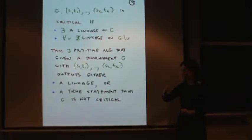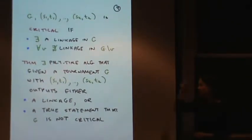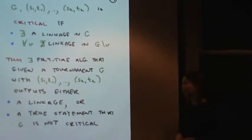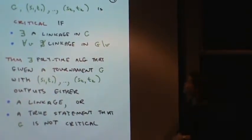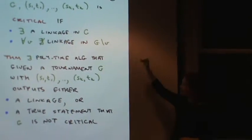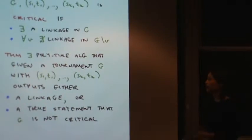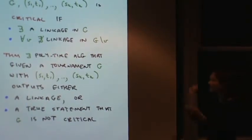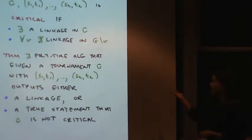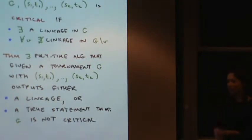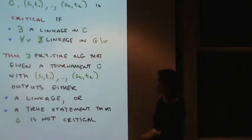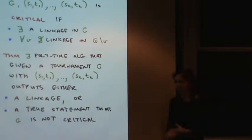What's a critical graph? It's actually a graph and a bunch of pairs of terminals. I say it's critical if I can find k vertex disjoint paths connecting si to ti, but also I want to insist that if I delete any vertex from my graph there is no linkage. So every vertex is necessary. If I delete any vertex, that destroys all my linkages.